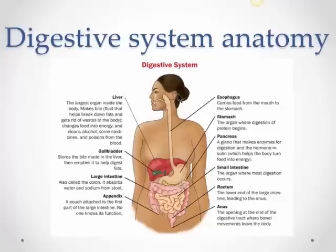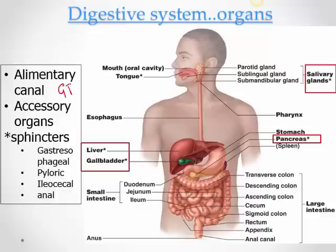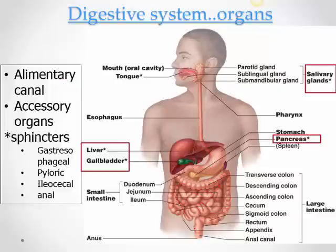Pay special attention to this slide because it gives you in a nutshell all the functions of the various organs. The digestive system consists of two portions: one is a tract that has a lumen, like a pipe which is enlarged in certain portions. This is known as the alimentary canal, also called the digestive tract or gastrointestinal tract.